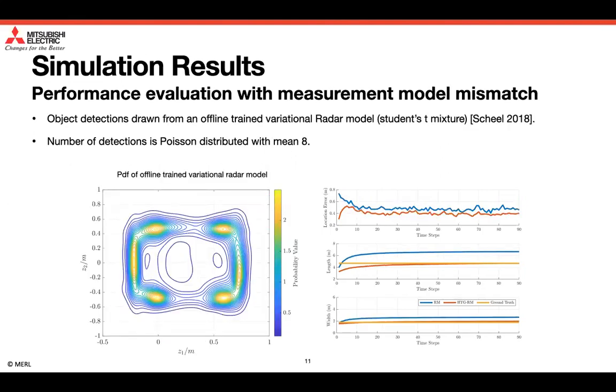In the simulation study, we also evaluate the performance of the proposed method with the measurement model mismatch. Specifically, the object detections are drawn from an offline trained variational radar model, represented by a student's t-mixture. Again, the number of detections is Poisson distributed with mean 8. As we can see from the simulation results, the performance of the proposed method is only slightly degraded.